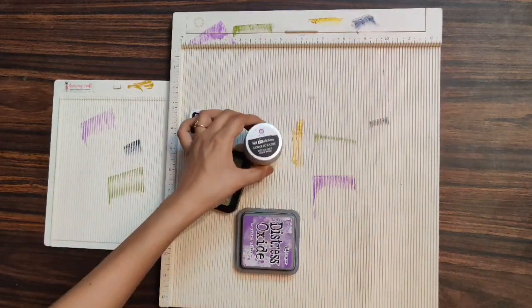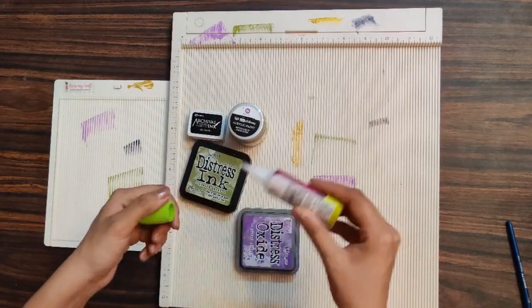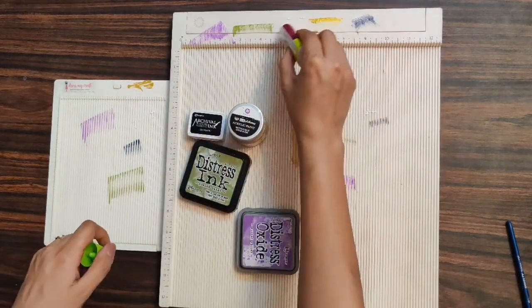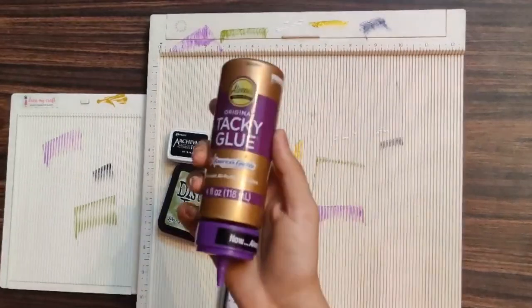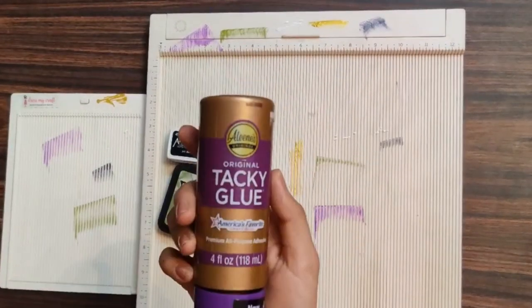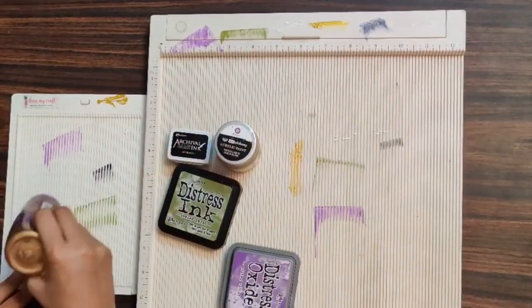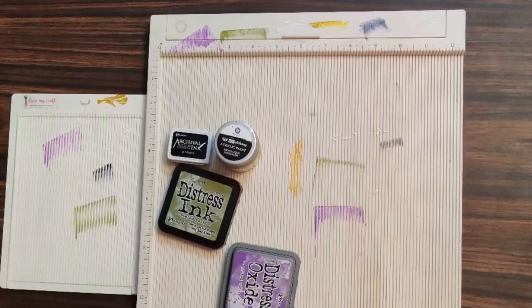Here I have an acrylic paint bottle and I am vigorously applying this as well onto my scoreboard. So just in case if you doubt that all these things could be removed, yes, your answer is yes, all these things can be removed.